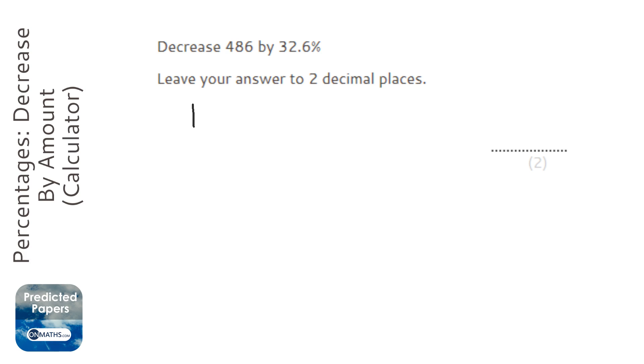So we always start off with 100%, and this is saying take away 32.6% because it's a decrease.